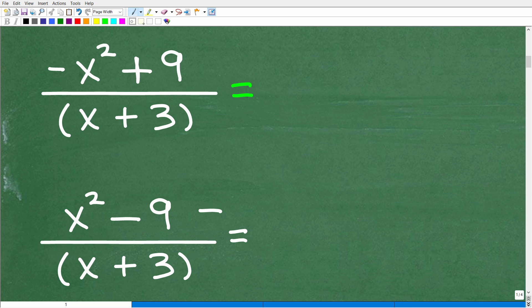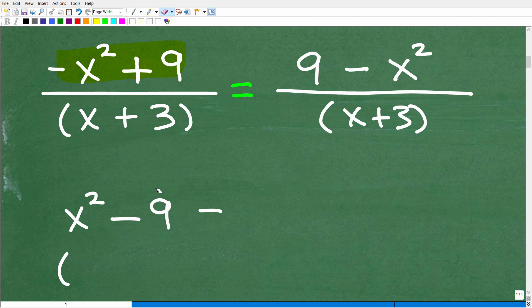The first thing that we can do right here is simply change the order of the numerator. We have negative x squared plus 9. Well, how about we write this as 9 minus x squared? This is a positive 9 minus x squared. This is the same thing as 9 plus a negative x squared, but we want to think of this as a difference so we can use the difference of two squares.